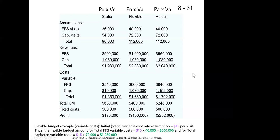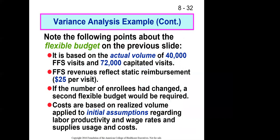The important thing to remember — rather than memorizing all the definitions — is just this simple progression: static is expected price times expected volume; actual is actual price times actual volume; flexible is expected price times actual volume. It's a blended column. Let's start talking about how the variance analysis is done.